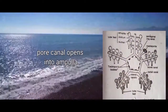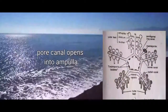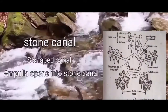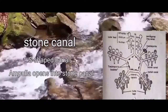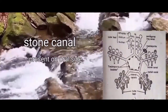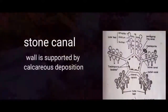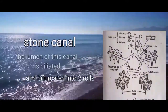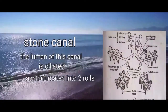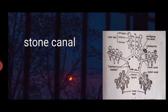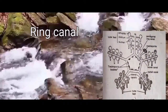The ampulla opens into an S-shaped stone canal. The stone canal is present on the oral side of the starfish. The wall of the stone canal is supported by calcareous deposition. The lumen of the stone canal is ciliated and is bifurcated into two scroll lamellae.